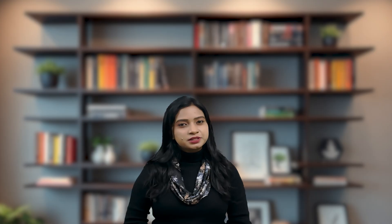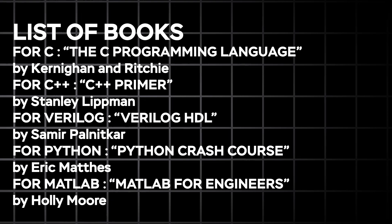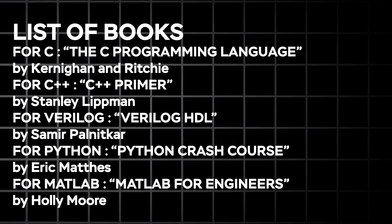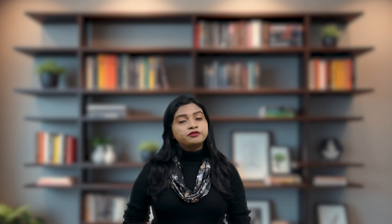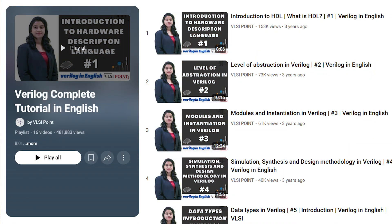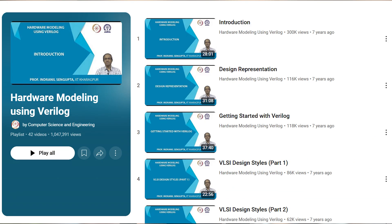Now let's discuss resources from where you can learn all five languages. Here is a list of reference books you can follow. For C and C++, you can follow Code with Harry, Apna College, or Jenny's lectures. For Verilog, refer to the VLSI Point playlist for basics, and for advanced topics, refer to Hardware Modeling Using Verilog by Professor Indranil Sen Gupta. For Python, follow FreeCodeCamp available on YouTube. For MATLAB, refer to the official MATLAB YouTube tutorials.